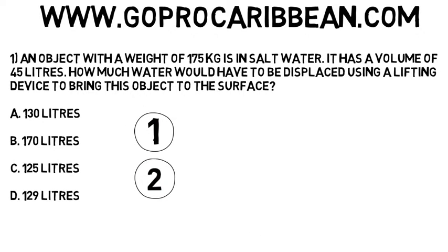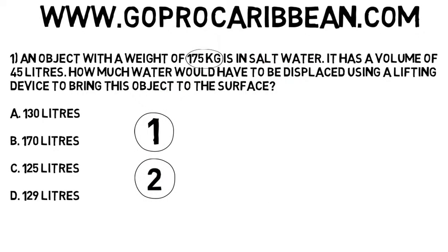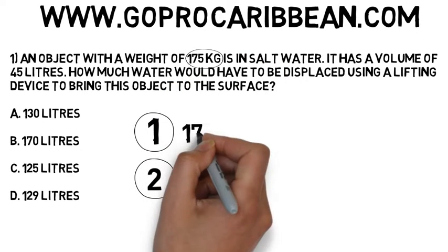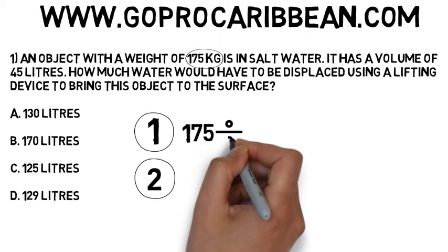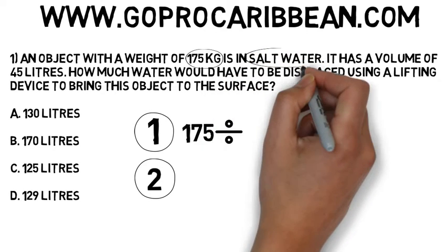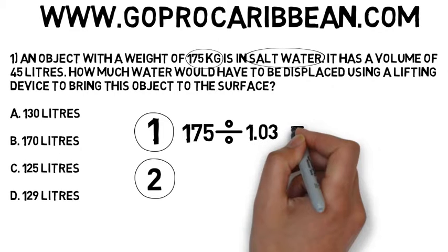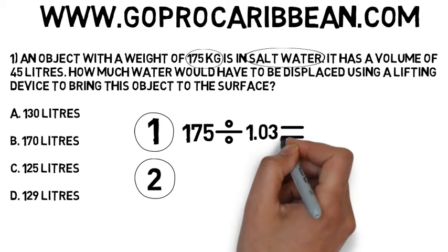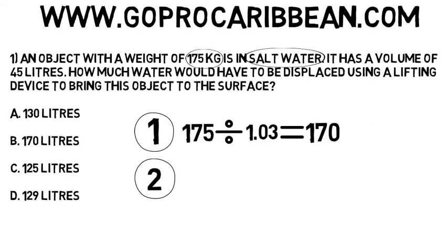It weighs 175 kilograms, so let's enter in 175. What we now need to do is take the type of water it is in and divide by the constant for that type of water. It's in salt water, so we put in 1.03. And we are able to calculate the total amount of water in litres that we need to displace to make this object neutral.